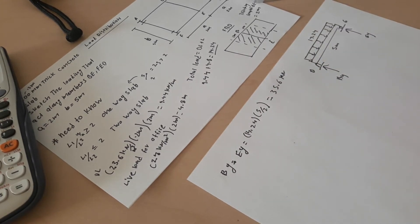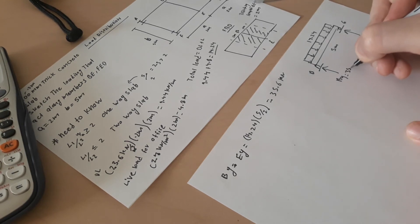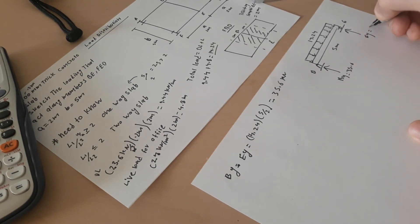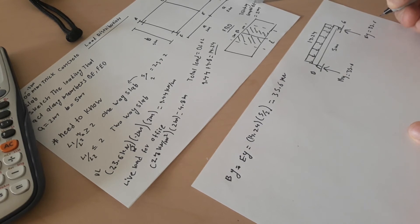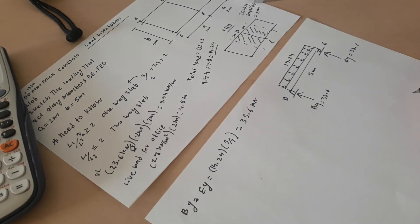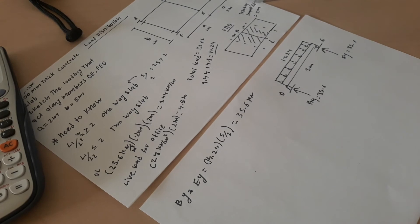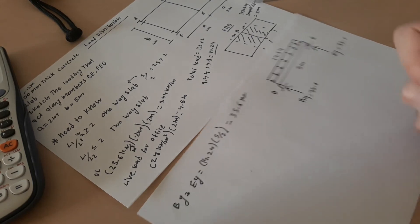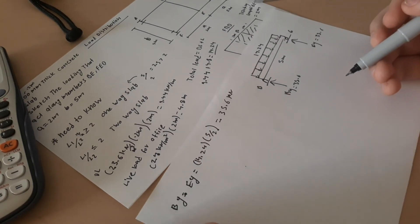So we know that By is 35.6 and Ey is 35.6 kilonewton. Now we need to draw for FED.